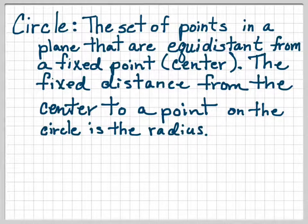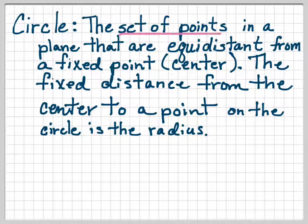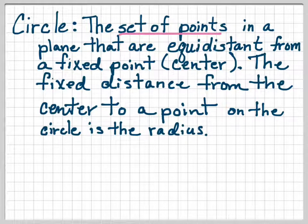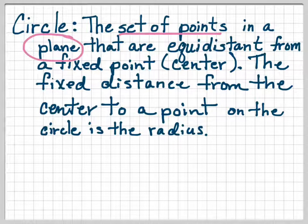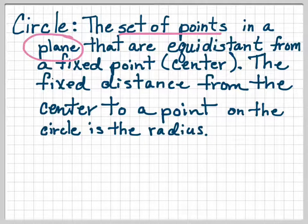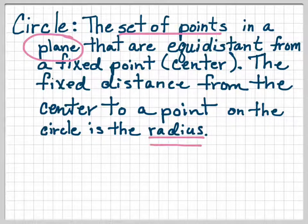So get that written down and into your brain, but let's pick it apart a little bit too, because one thing that we mentioned is that it is a set of points. A circle is a set of points, or a locus of points is another way to say it. And we have to state in a plane. A plane is a flat surface. If we didn't say that it was in a plane, then we would have the definition of a sphere.